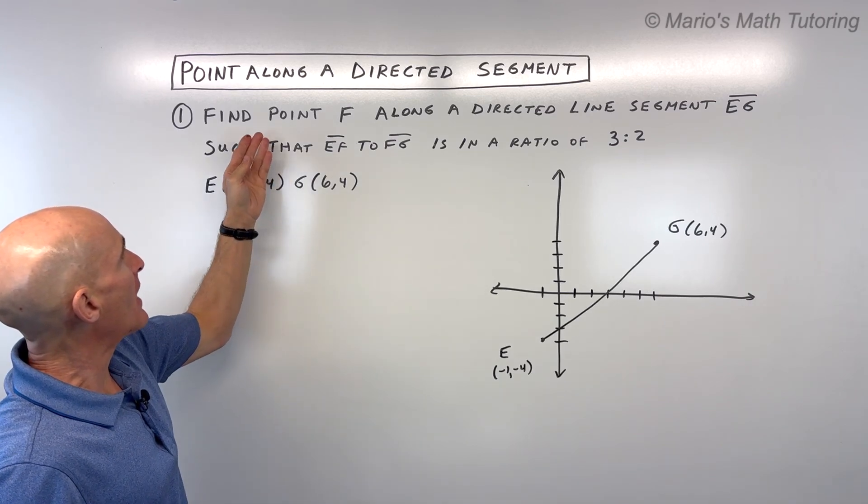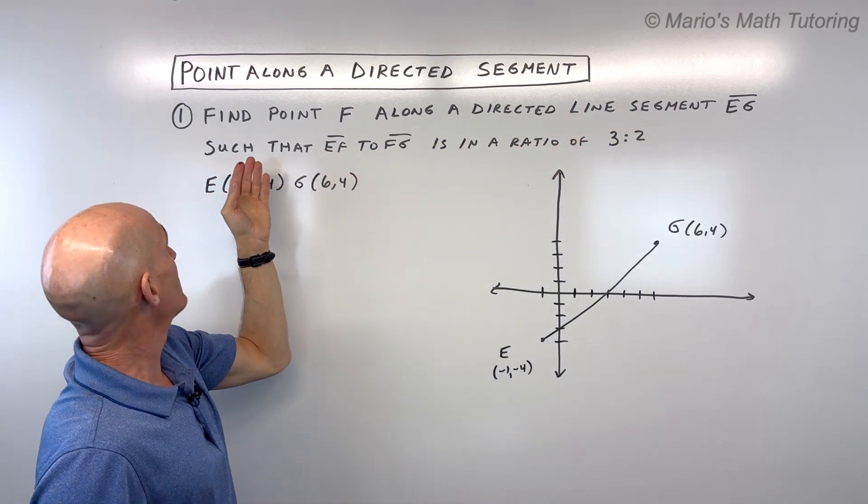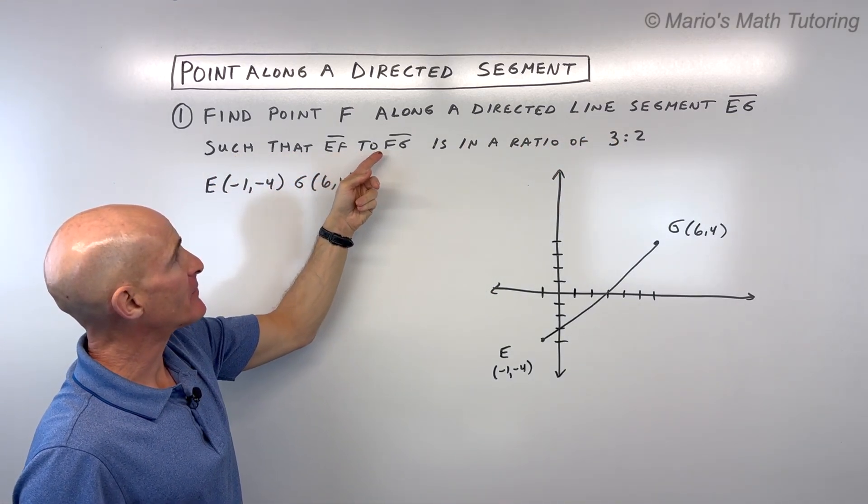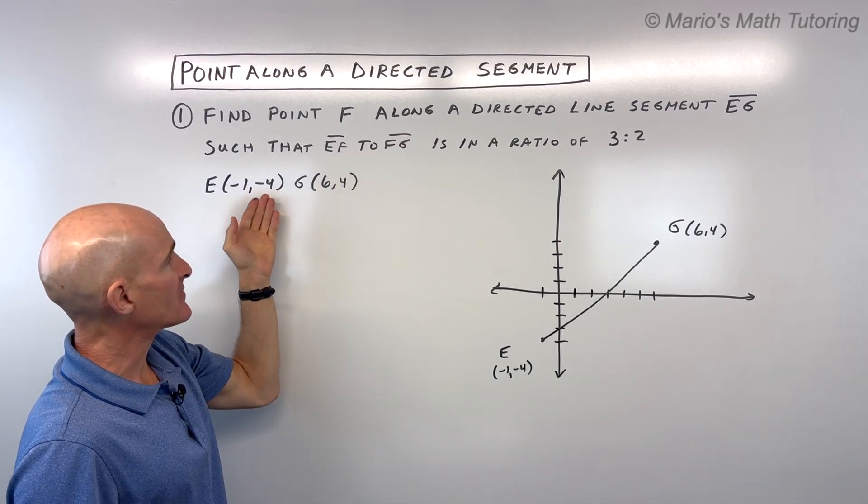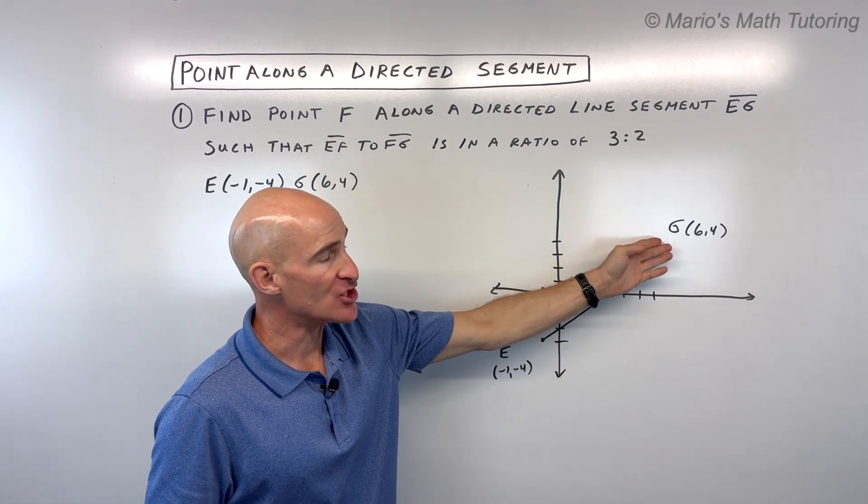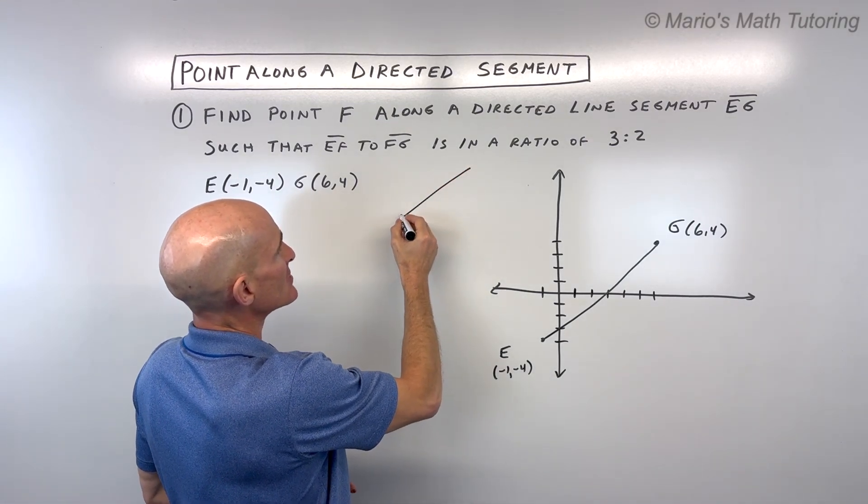We've got find point F along a directed line segment, EG, such that EF to FG is in a ratio of 3 to 2. And it gives us the two coordinates of points E and G. So what does this mean exactly?